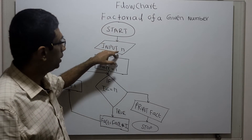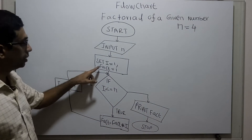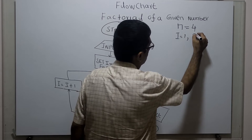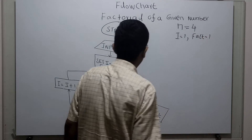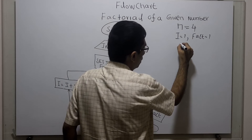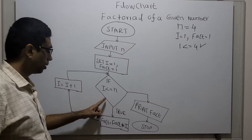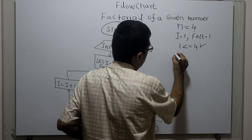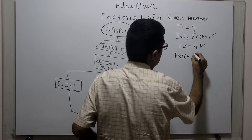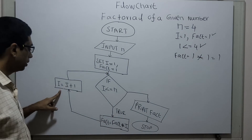Logical start, input n. I am giving n value as 4. I am initializing i equal to 1, fact equal to 1. I am checking i less than or equal to n — 1 less than or equal to 4 — this is true. I am multiplying: fact equal to fact multiplied by i. Existing value of fact is 1, multiplied with value in i which is 1, so fact value is 1. I am incrementing i by 1.